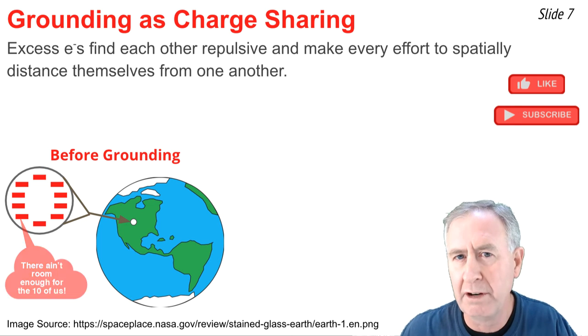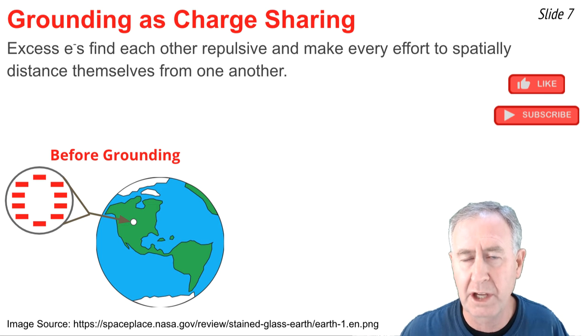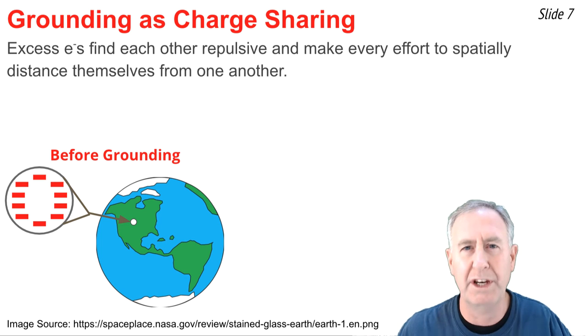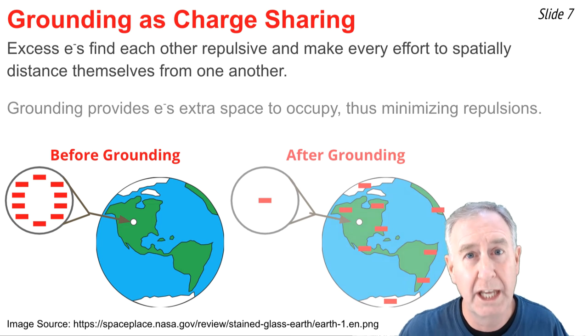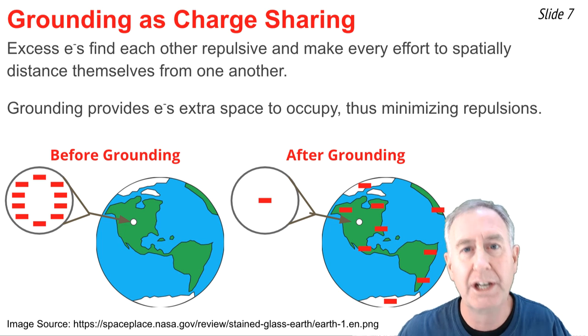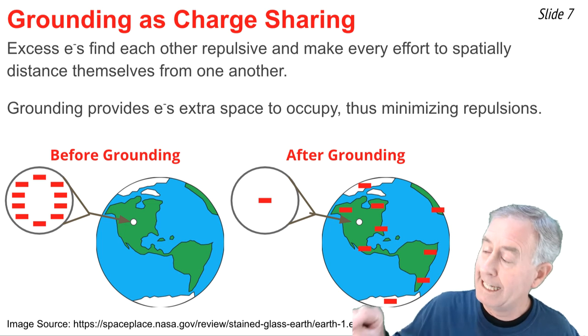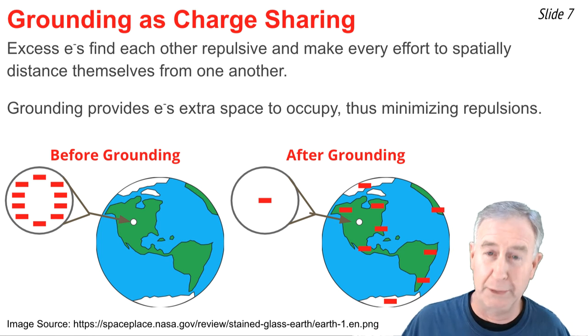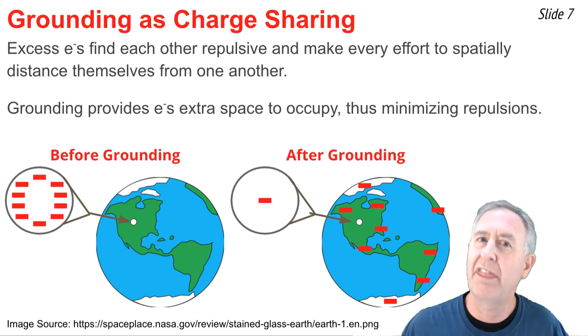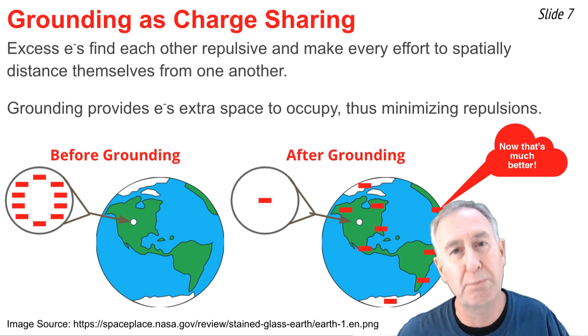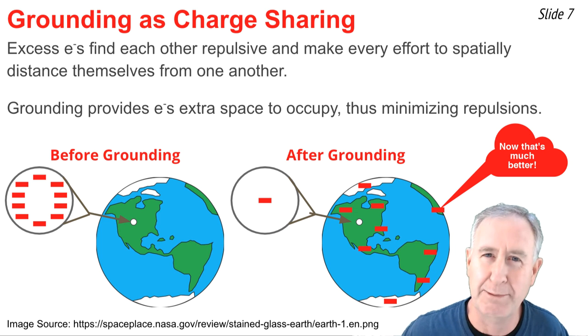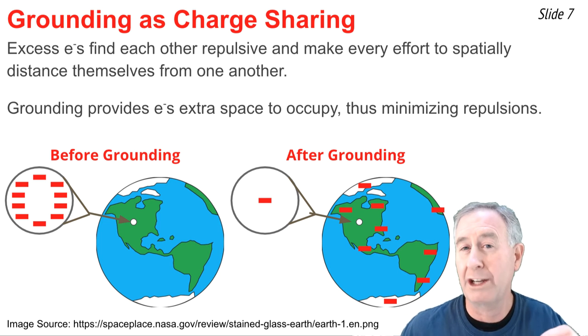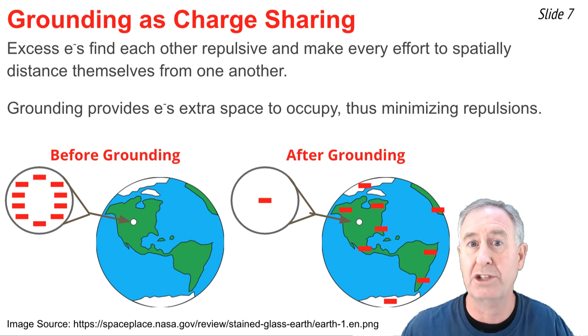Now, those electrons on this really small object in the middle of the United States can only go as far as the perimeters of that object. So when we ground an object, what we're doing is we're allowing it to have more space to spatially distance itself. So when I touch that object, electrons will flow through me into the ground or the earth. And as you can imagine, that would give excess electrons considerably more space by which they could distance themselves. So I like to think of grounding as a charge-sharing event, where a charged object shares its excess charge with a much considerably larger object in order to minimize the repulsions.